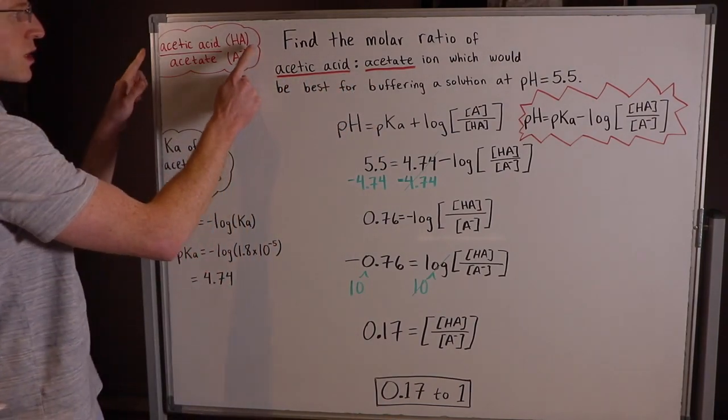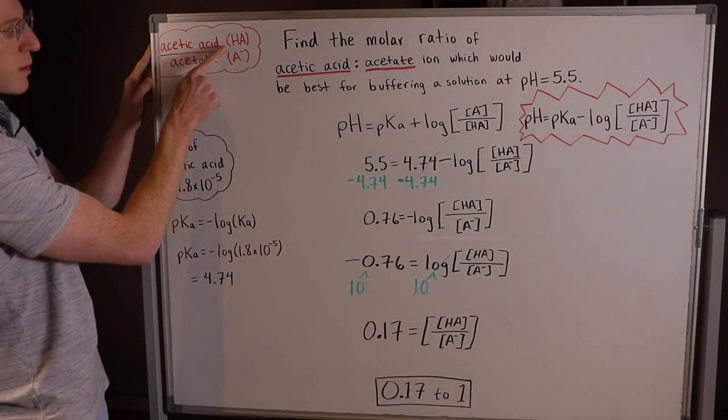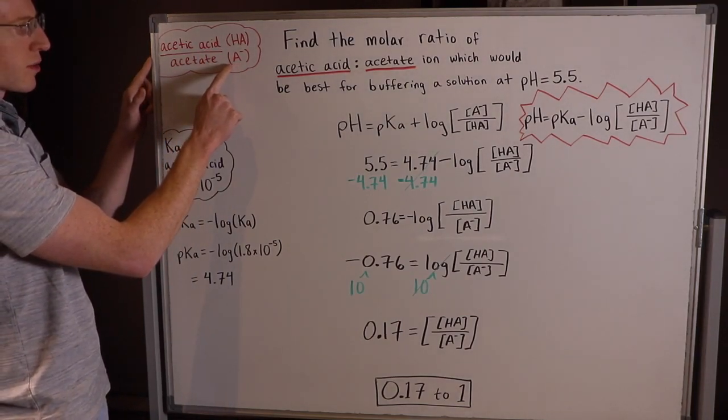So really they're asking for this ratio here. Acetic acid, or the general form of the acid we write as HA, over acetate, the conjugate base which we write generally as A-.